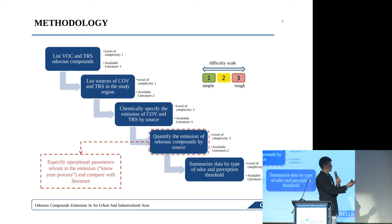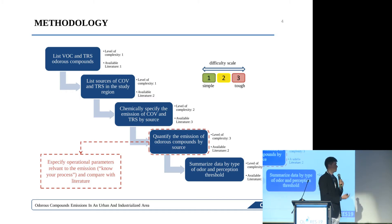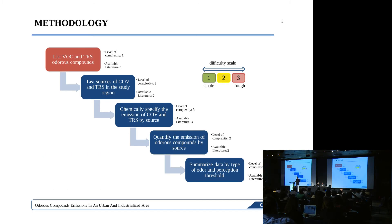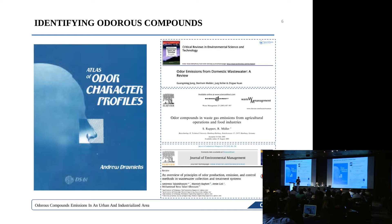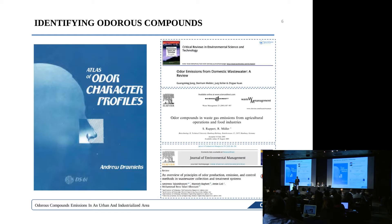This is the methodology we used to construct the emission inventory. First, we list the VOC and TRS compounds. After that, we list the sources of VOCs and TRS in the study region. Then we chemically specify the emissions of VOCs and TRS by source, quantify the emission of odorous compounds by source, and summarize the data by type of odor and perception threshold. We assigned a difficulty scale ranging in level of complexity and available literature.